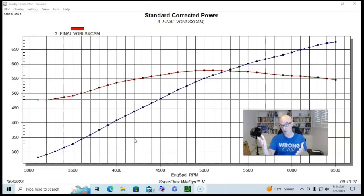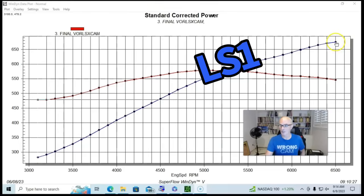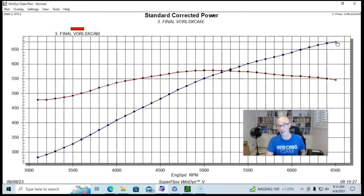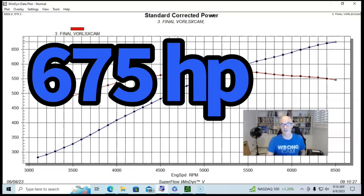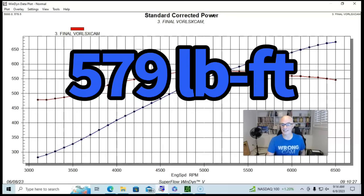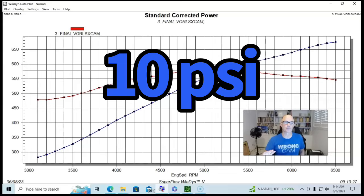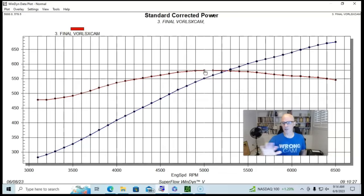Here is our LS1 with the Vortex supercharger on it. Run with our supercharger out to 6500 RPM where it made peak power, the Vortex supercharged 5.7 liter LS1 with the comp cam produced 675 horsepower. Peak torque checked in at 579 foot pounds of torque. This was at a peak of about 10 pounds of boost.